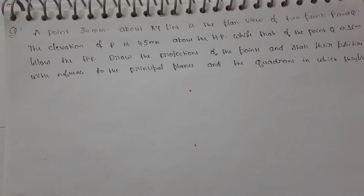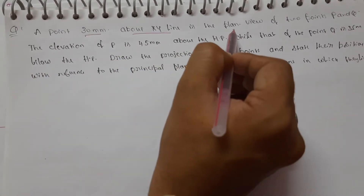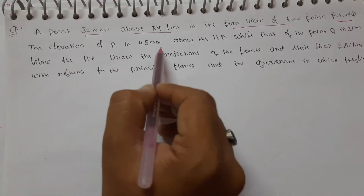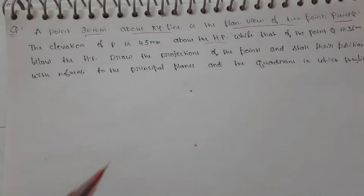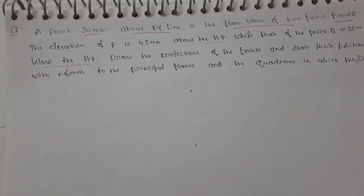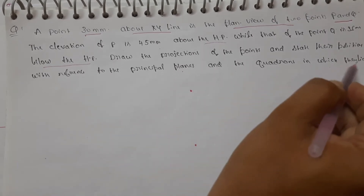This problem is very simple but confusing. 30mm above the XY line is the plan view of two points P and Q. The XY line is the plan view of both P and Q. The elevation of P is 45mm above HP, and Q is 35mm below the HP. Draw the projections of the points and state their positions with reference to the principal planes and the quadrant in which they lie.